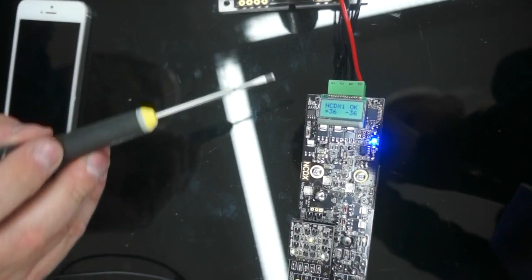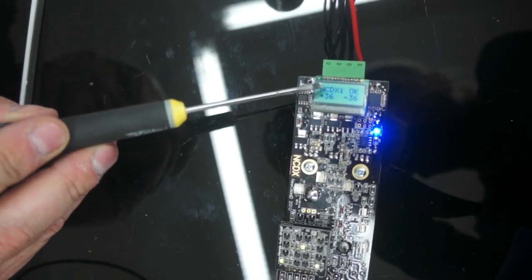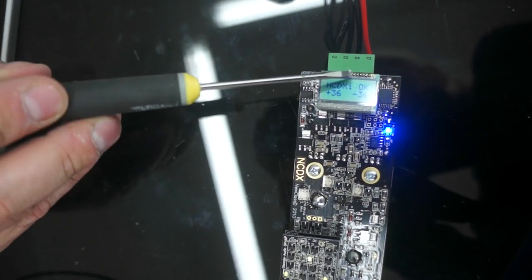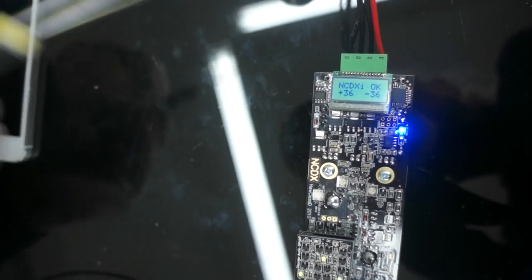You can see the display here. It shows our logo here, then everything is okay here. And here it shows the supply voltage rails, plus minus 36 volts.